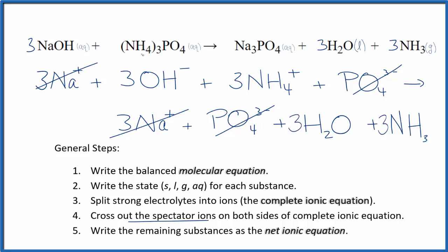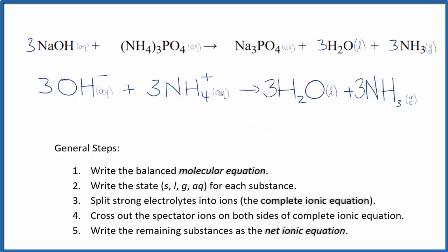What's left is the net ionic equation for NaOH plus (NH4)3PO4. I'll clean this up and write the states - we'll have our balanced net ionic equation. Often you'll see the positive ion put first; doesn't really matter, just looks a little nicer.